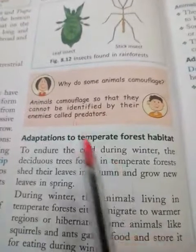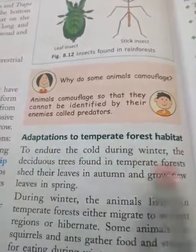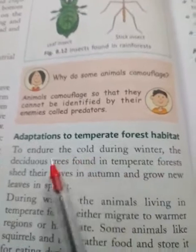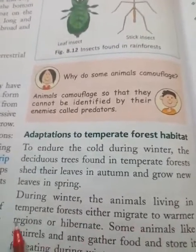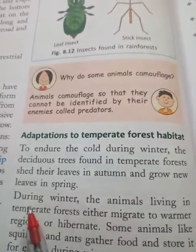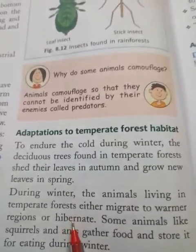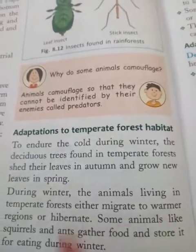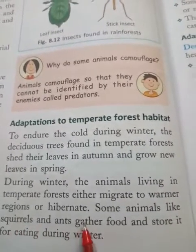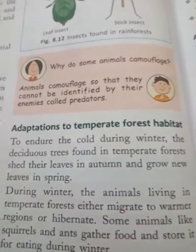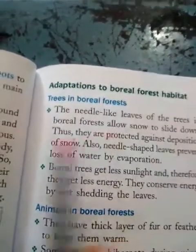Adaptation to temperate forest habitat — to endure the cold during winter, deciduous trees are found in temperate forests। During winter, animals living in temperate forests either migrate to warmer regions or hibernate। Some animals like squirrels and ants gather food and store it for eating during winter — सर्दियों के लिए खाना इकट्ठा करते हैं।